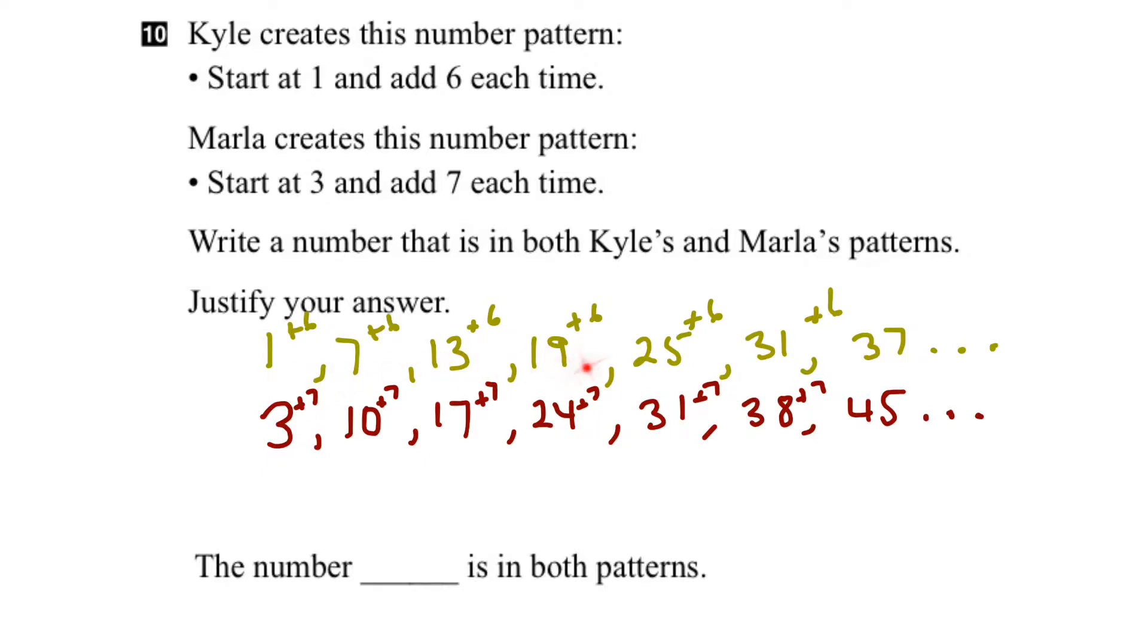Okay, let's look at the patterns and see if any of the numbers match up. Well, if we do that, we can see that 31 is in both number patterns. So there's 31 there, 31 there. So therefore, the number 31 is in both patterns.